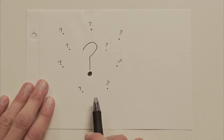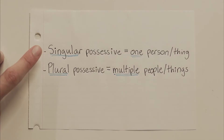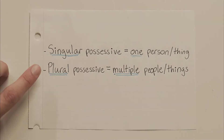The difference between singular possessive nouns and plural possessive nouns is that with a singular possessive, you have one thing owning some stuff, and with a plural possessive, you have multiple things owning some stuff.